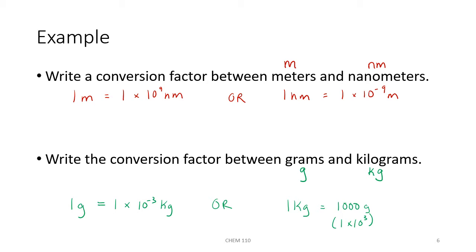I often find it easier to assign the larger unit as one and ask myself how many of the smaller units are in the larger unit. For the meters/nanometers example I would write: one meter equals one times ten to the positive ninth nanometers. For kilograms/grams: one kilogram equals one thousand grams. You always have a positive exponent for how many smaller units are in a larger unit.